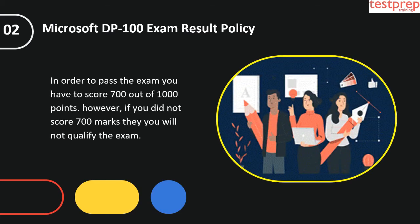Microsoft DP100 exam result policy. In order to pass the exam you have to score 700 out of 1000 points. However, if you did not score 700 marks then you will not qualify the exam.